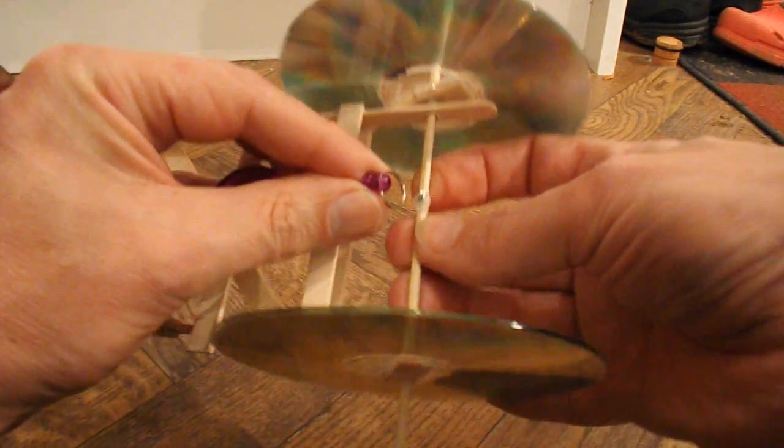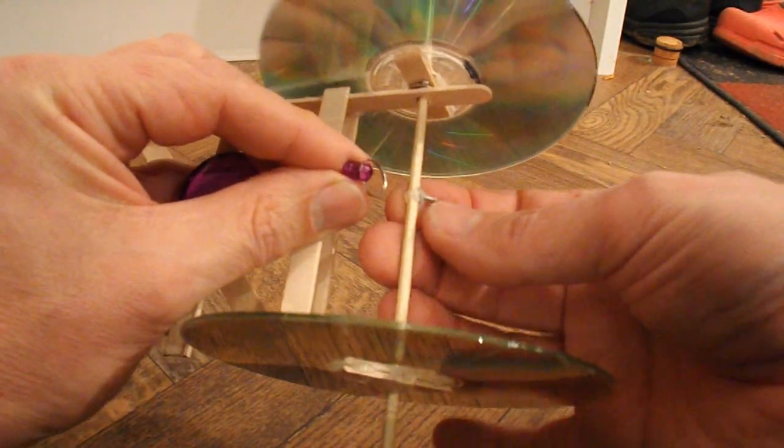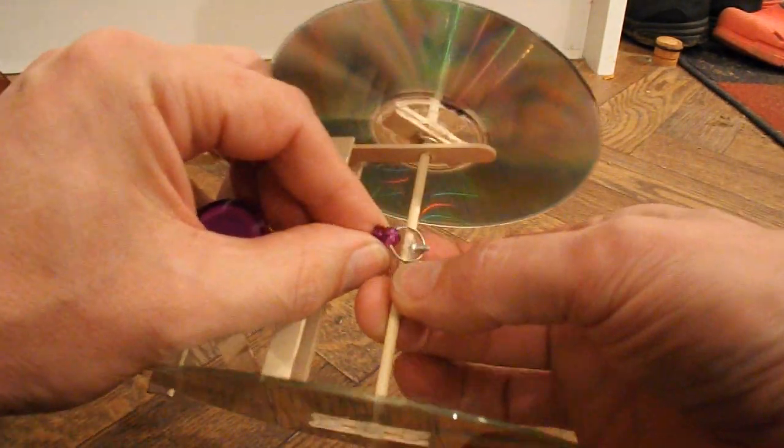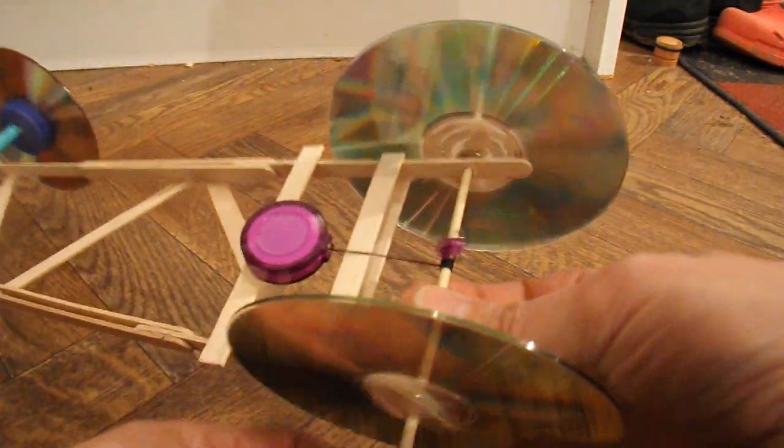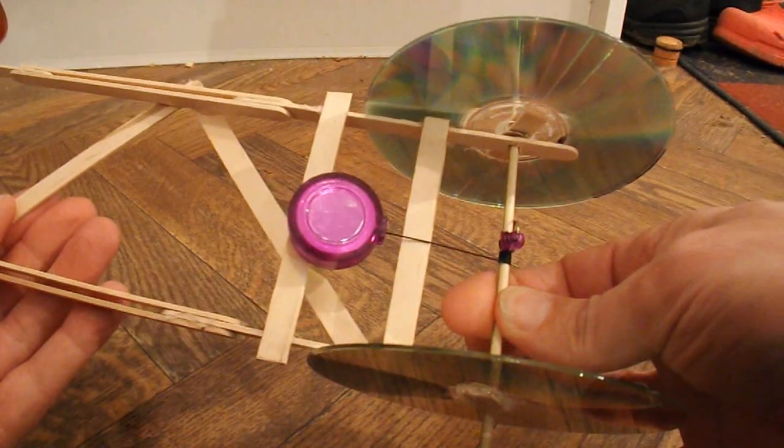So it can just clip over that popsicle stick. And then I can put the loop straight onto the hook that I put on the back axle. That holds it in place. And we can wind it up. And that's it.